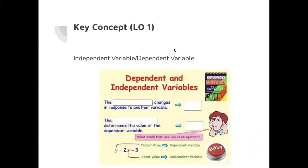Now we're going to learn about independent variable and dependent variable. The dependent variable is the variable that changes in response to another variable — this is the output value. So output, range, y, and dependent variable are all synonyms. The independent variable determines the value of the dependent variable — we call this the input. The independent variable is the one making the dependent variable change. I'm going to explain this more in a minute by solving some problems.